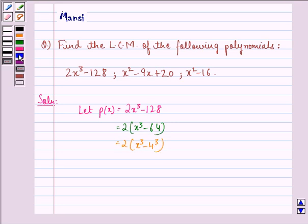Because 64 is equal to 4 cubed, that is equal to 2 times (x minus 4) times (x squared plus 4x plus 16). This polynomial uses the identity a cubed minus b cubed equals (a minus b) times (a squared plus b squared plus ab).